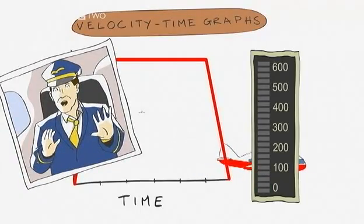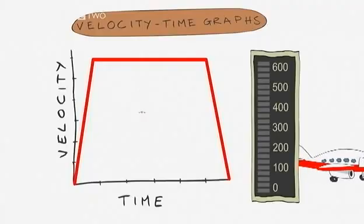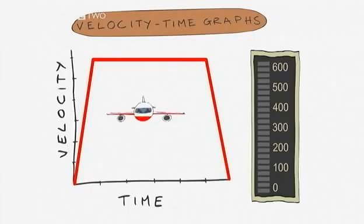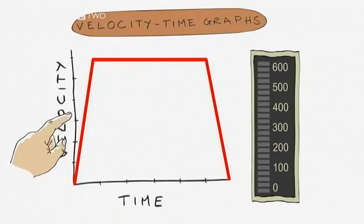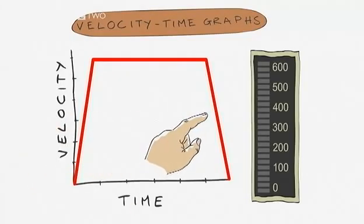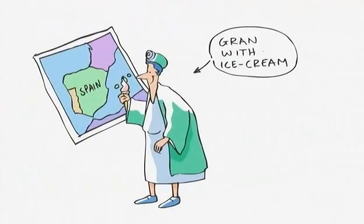So what does a velocity time graph tell us? A horizontal line means there is no change in velocity. Be careful. It doesn't necessarily mean the object is at rest. If we have a sloping line, then we have a change in velocity. The object is accelerating or decelerating. The steeper the line, the greater the acceleration or deceleration.